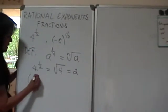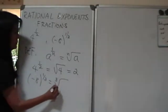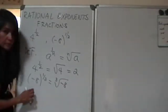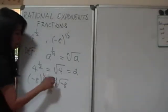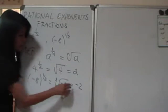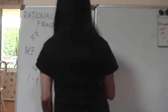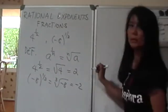Likewise, if I have negative 8 to the 1/3, then that means the cube root of negative 8. And we know that cube root of negative 8 is negative 2. When you multiply negative 2 three times, you get negative 8.